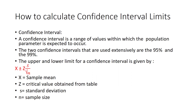There are two confidence intervals used extensively across the world that researchers use most frequently: 95 percent and 99 percent. The upper and lower limits for a confidence interval are given by the formula: x plus and minus z times s divided by the square root of n.